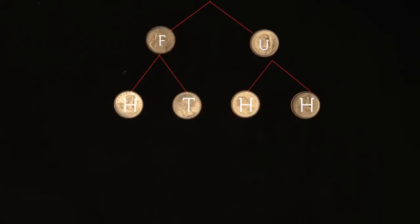Our tree is finished and we see it has four leaves, representing four equally likely outcomes.